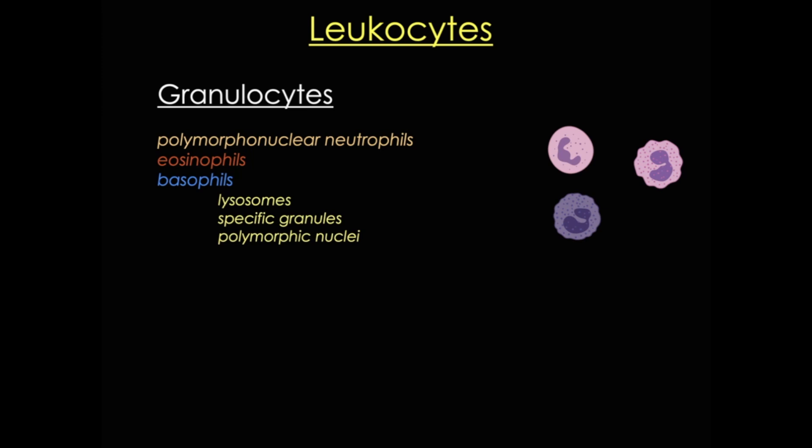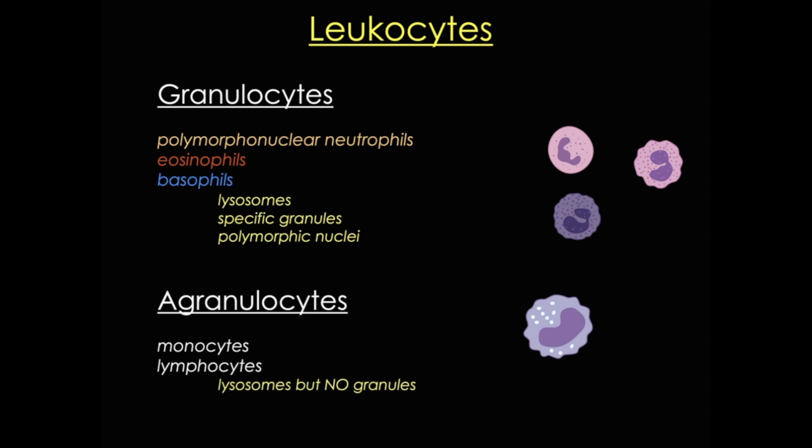The second class, agranulocytes, don't have specific granules, but they can contain lysosomes. These cells also do not have lobed nuclei, but instead their nuclei are spherical or even indented. Each of these cells has specific functions, and I'll talk about each cell, what specific function it serves, and how to recognize it in the blood.